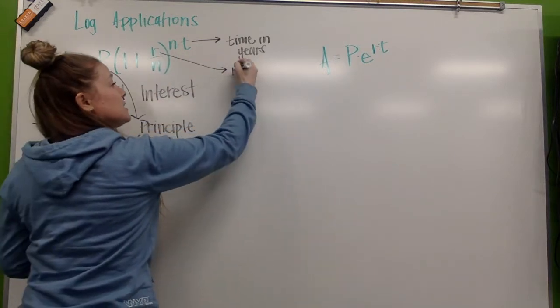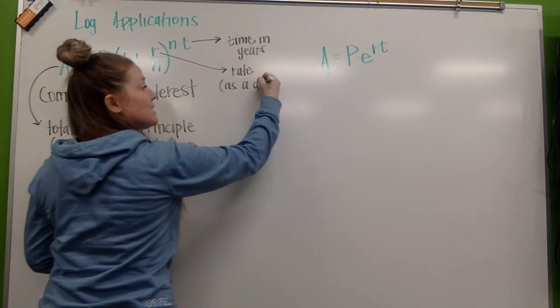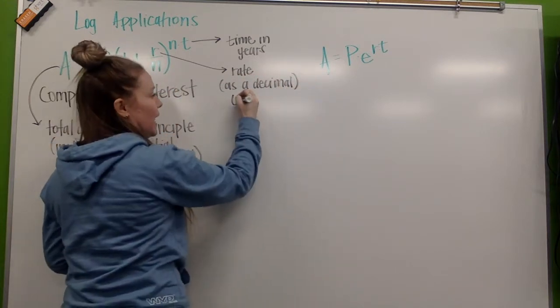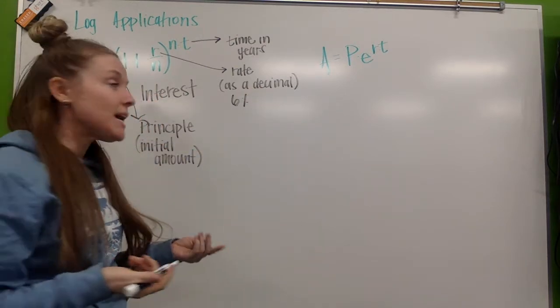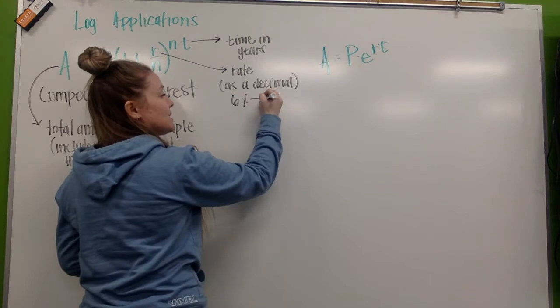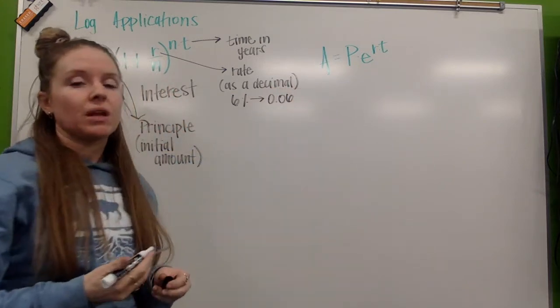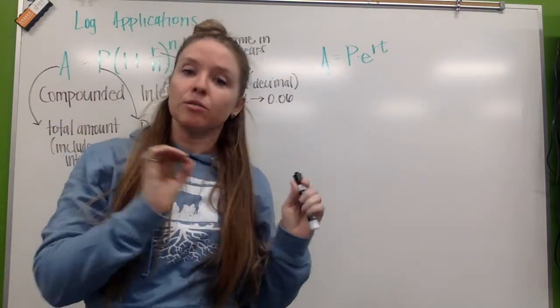R, this is our rate, and it is always written as a decimal. So, for example, if we had 6%, the loan increases at 6%. We have to use that 6% as 0.06. So, we're not going to plug in 6 for our rate. We're going to plug in the decimal, 0.06.